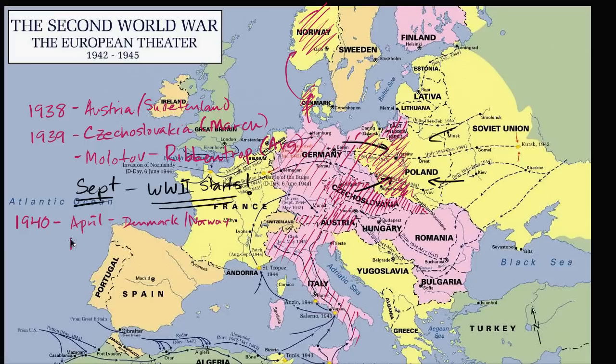And then in May of 1940, Germany invades the Netherlands and Belgium — sometimes called the Low Countries, because the land in the Netherlands is very close to sea level, or sometimes even below sea level.